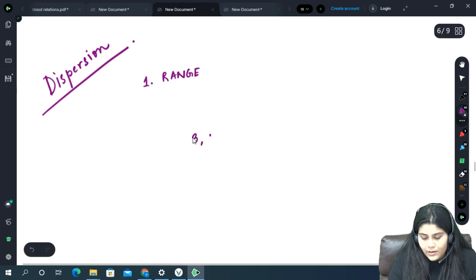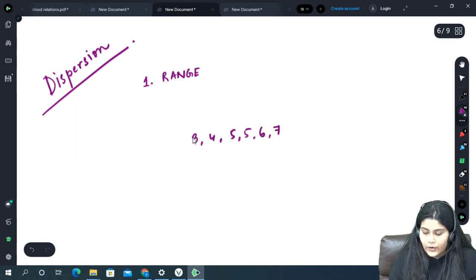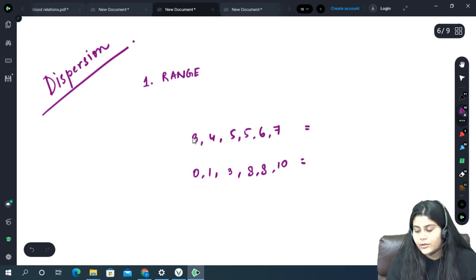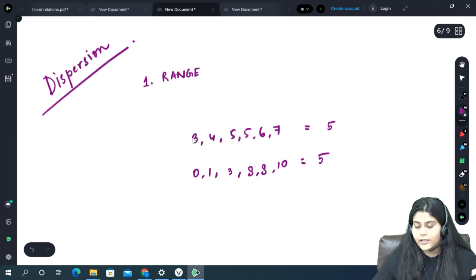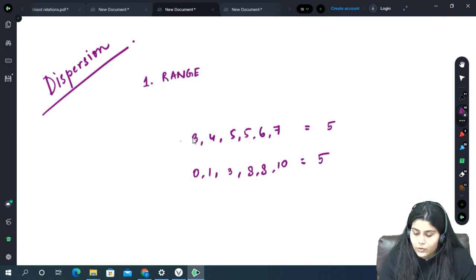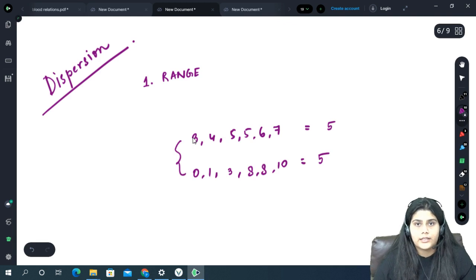For example, if there are numbers 3, 4, 5, 5, 6, 7 and 1, and one set is 0, 1, 3, 8, 8 and 10. If we calculate the mean for both sets, then the mean will be 5. Calculate to see both means? 5. But there is so much difference between both of the sets.